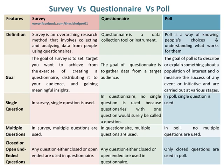The goal of Poll is to describe or explain something about a population of interest and to measure the success of any event or initiative, and polls are carried out at various stages. In Survey, a single question is used. Whereas, in Poll, a single question is also used. In Survey, multiple questions are used.